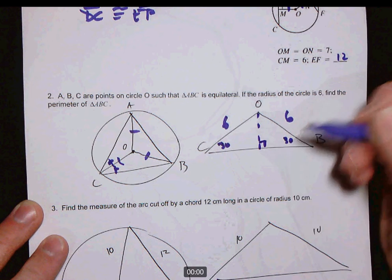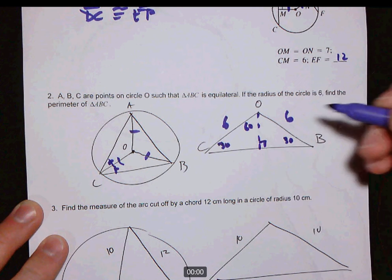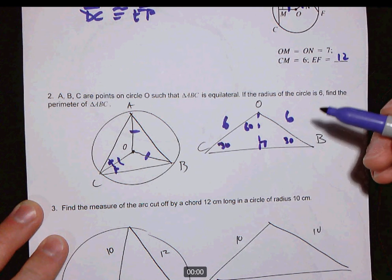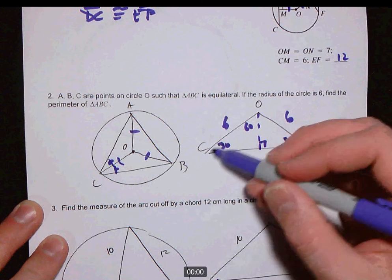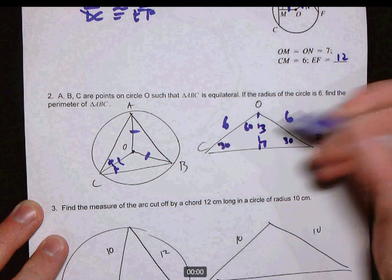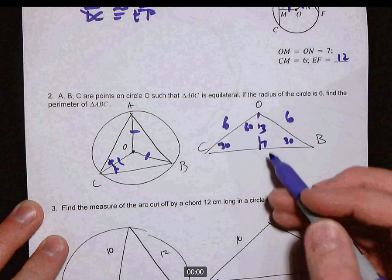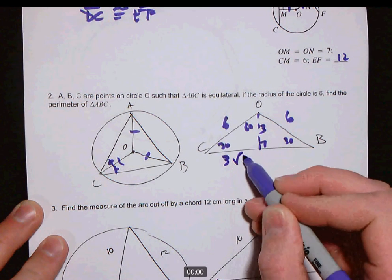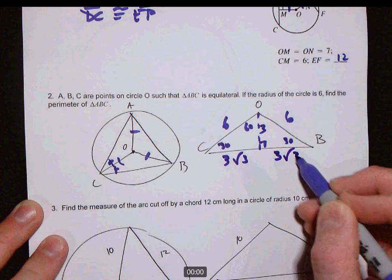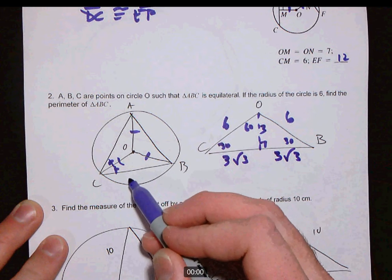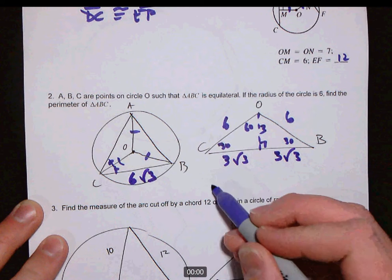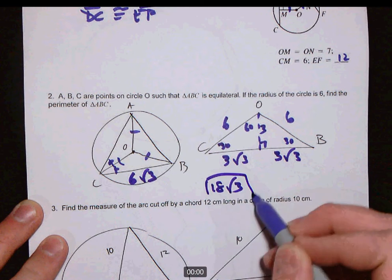And that means if you drop this altitude right here, you get a 30-60-90 right triangle. In the 30-60-90 right triangle, if the hypotenuse is 6, this side opposite the 30 degree angle is 3, and then this length is 3 root 3, which makes the side of the triangle 6 root 3, and the perimeter then 18 root 3.